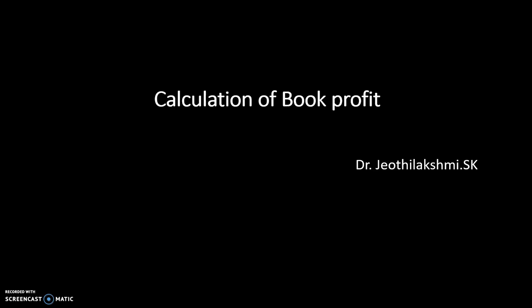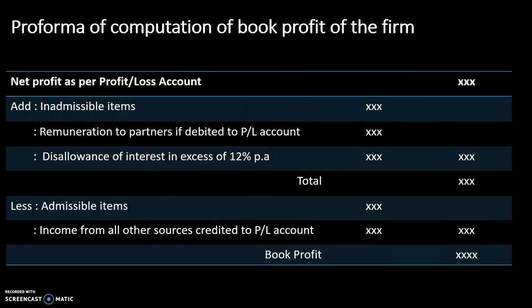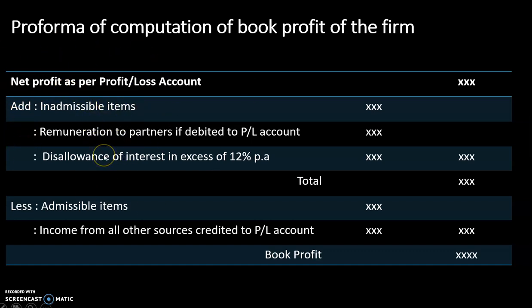The allowable limit is explained in Section 40B. Now we are moving on to the calculation aspect. There is a pro forma for computation of book profit. The net profit as per the profit and loss account will be written first, and you will have to add the inadmissible items — for example, remuneration to partners if debited to the profit and loss account.